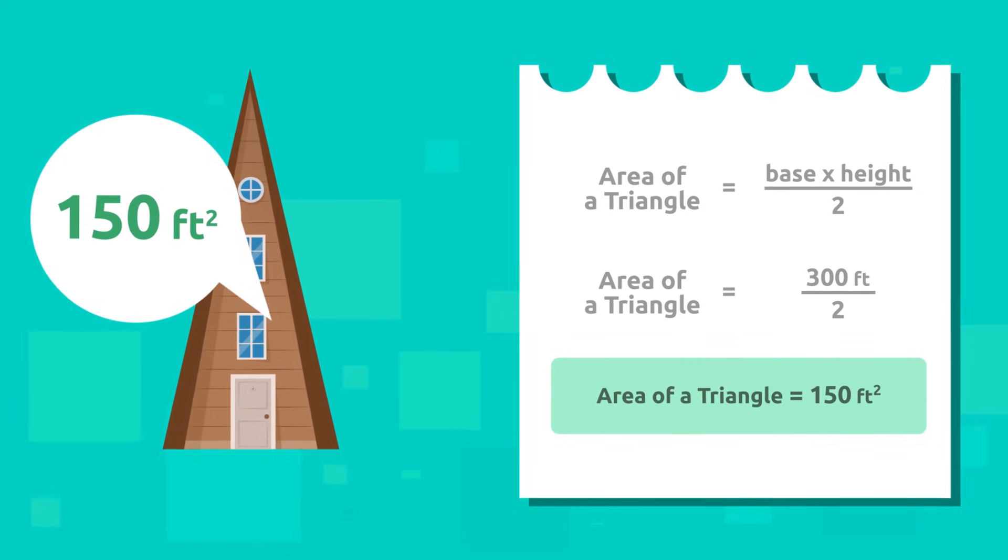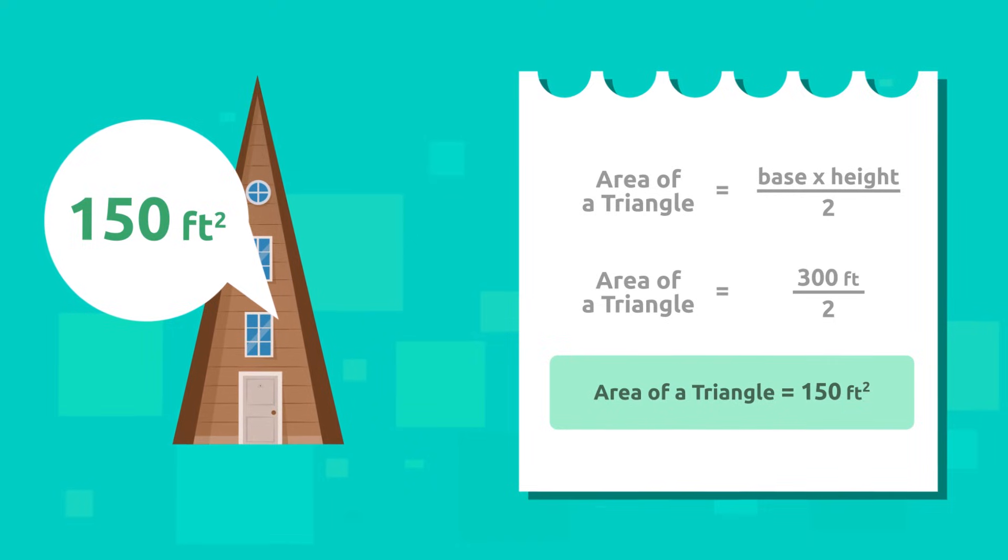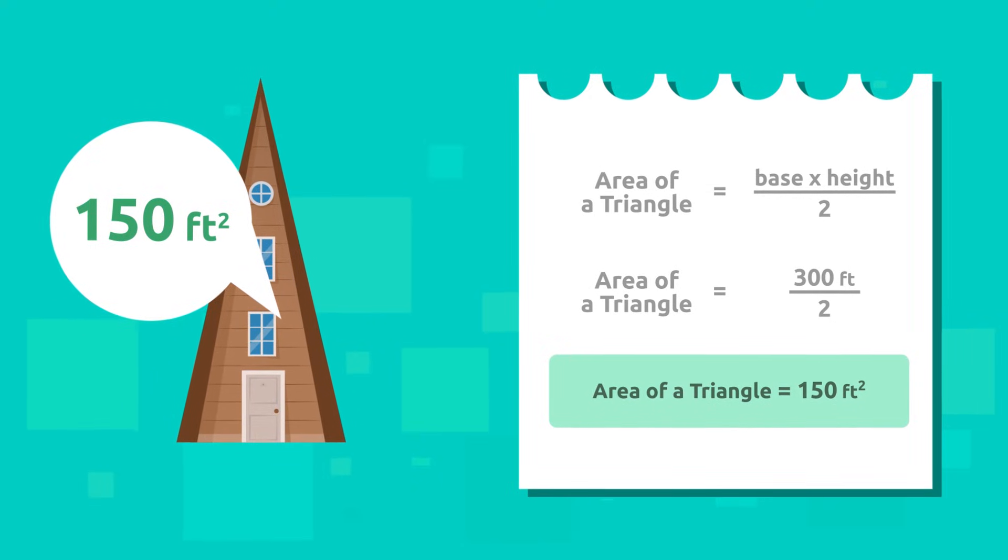Very good! The area of Anna's triangular house wall is 150 square feet. She'll have to buy a lot of paint.